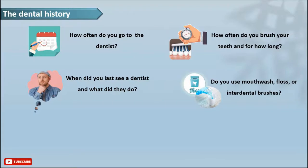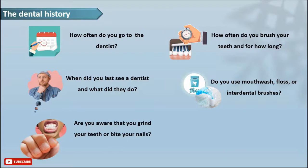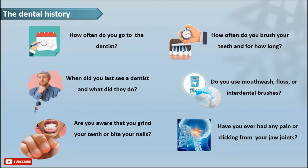It will also give you a good clue about their oral hygiene and also gingival condition. Then you ask them about if they are aware of any parafunctional habits they experience like grinding or clenching their teeth or biting their nails because it might lead to temporomandibular joint disorders and also teeth problems like incisal wearing and so on. Then you ask if they ever had any pain or clicking in their jaw joints while opening or closing or yawning because it might indicate any temporomandibular joint pathology.